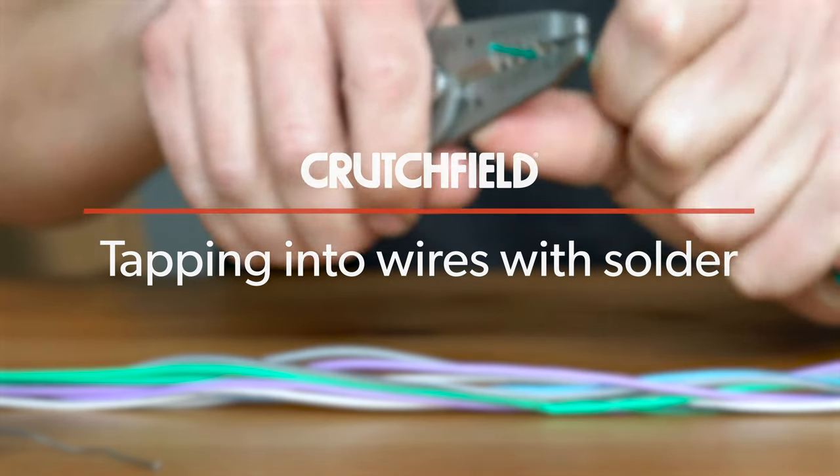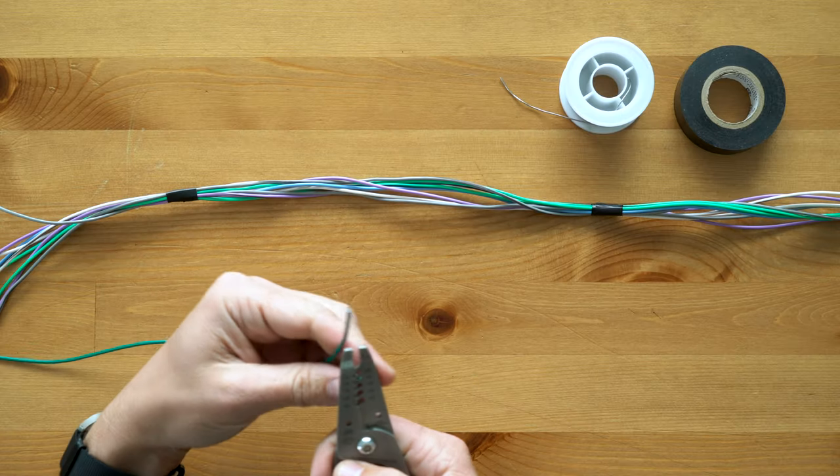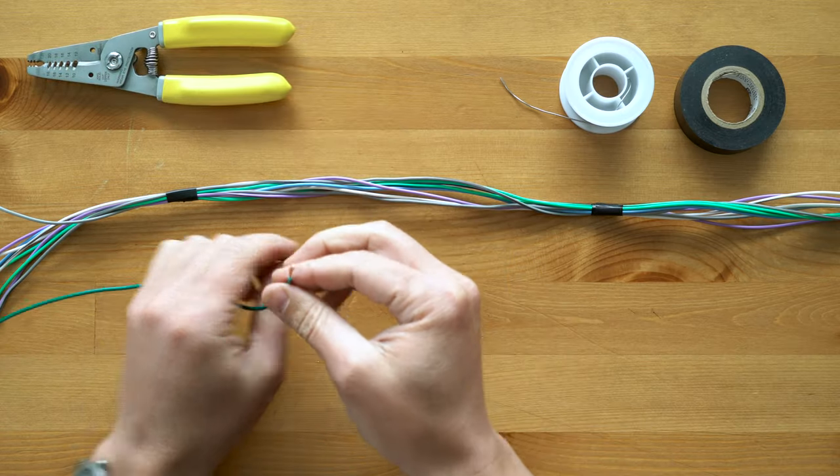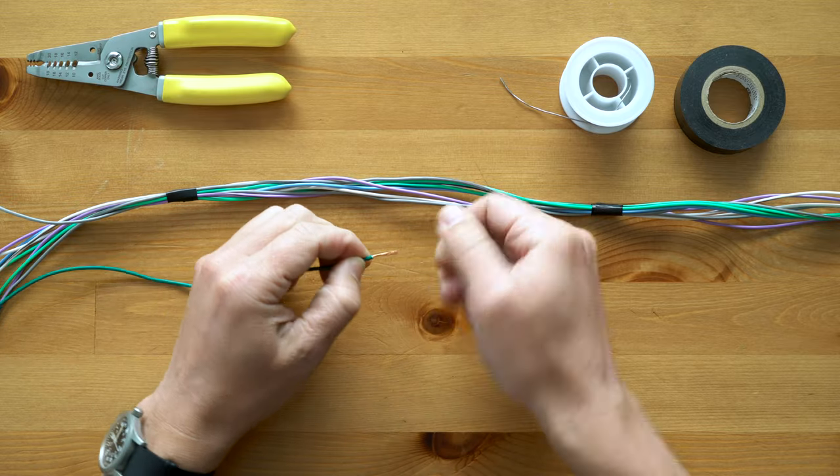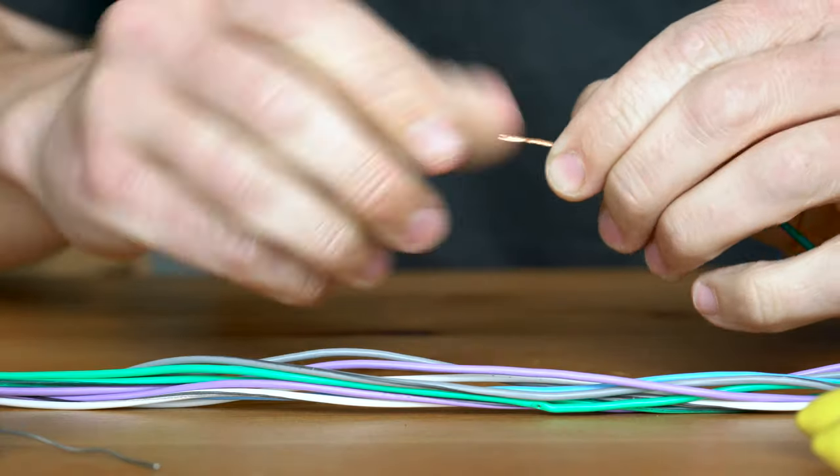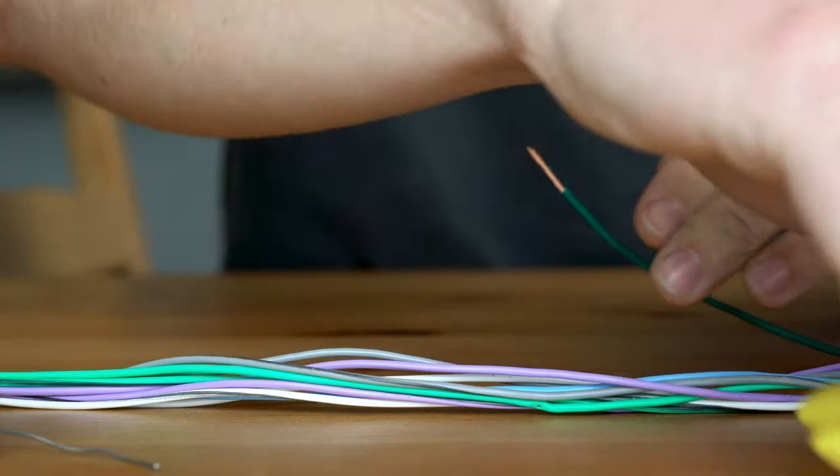Start by stripping back about half an inch of insulation material from the end of your new wire, exposing the copper underneath. Twist the loose strands together to avoid the wire ends from fraying and to make it easier to work with.